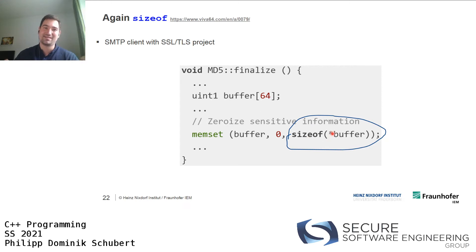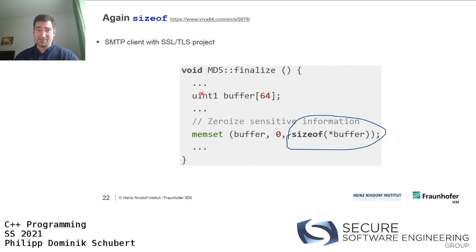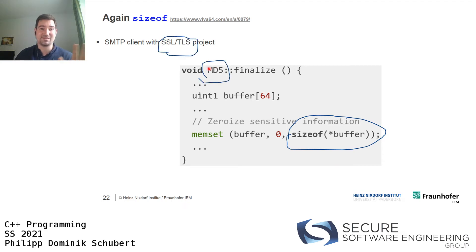Another sizeof issue in Chromium: a buffer array of 64 elements is passed to a zeroing function, but 'sizeof(*buffer)' gives the size of one element (1 byte), so only the first byte is zeroed out, leaving the remaining 63 bytes unzeroed. This is a security-critical function, making the bug especially dangerous.